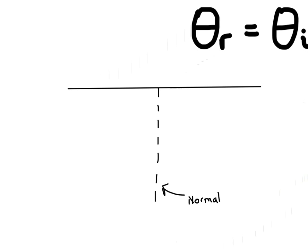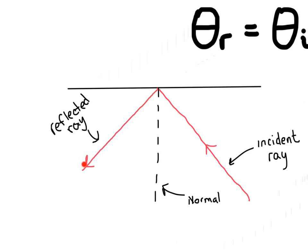The normal line helps us analyze the angle of reflection and the angle of incidence. We draw in our incoming ray — the ray of incidence — hitting the mirror, and then it bounces off at an equal angle. The angles are going to be between the normal line and the two rays. A common mistake is calling the angle between the incident ray and the mirror the angle of incidence — but the angle of incidence is between the normal line and the incoming ray.